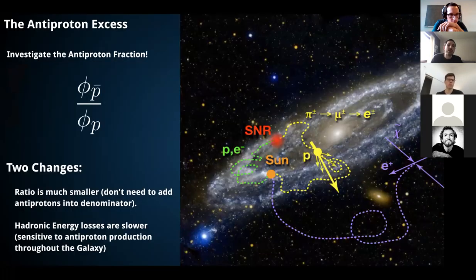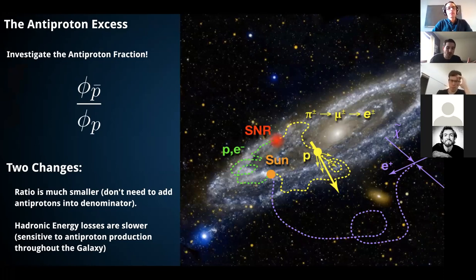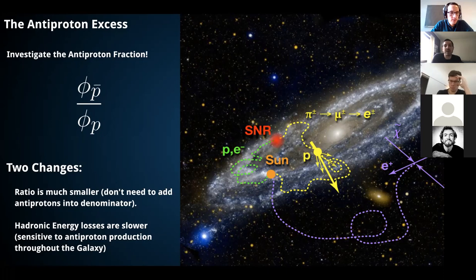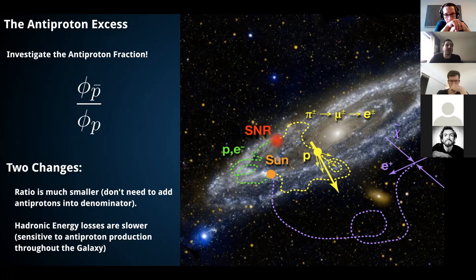What is the antiproton excess? It's a measurement of the antiproton fraction reaching Earth. Protons are accelerated primarily in supernova events: a supernova explodes, produces a huge shock front, that shock front produces turbulence which accelerates protons to very high energies, from a GeV all the way up to maybe a PeV. It doesn't produce a lot of antiprotons because it accelerates whatever is there, and stars are made of matter, not antimatter. So there just aren't a lot of antiprotons around to be accelerated.